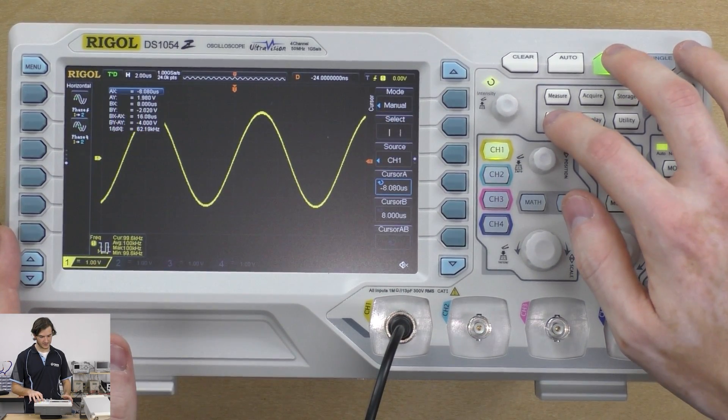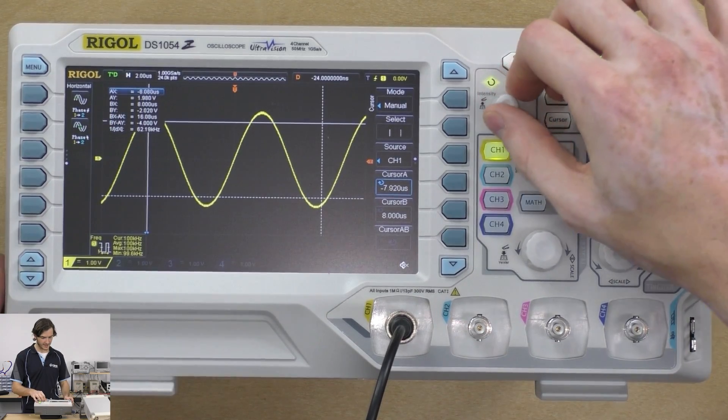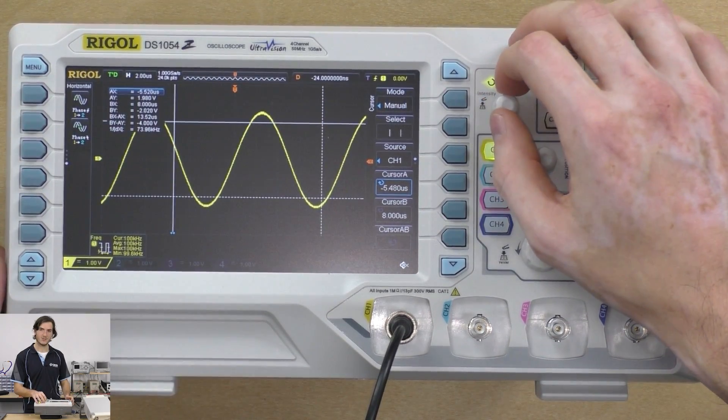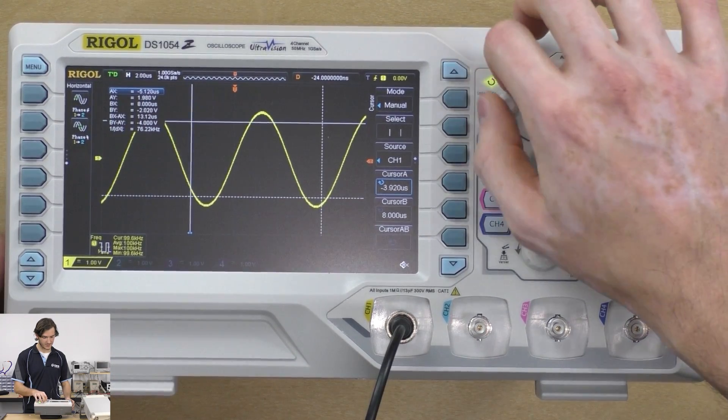We can bring up the two XY modes so we have two solid lines for XY and two dotted lines for XY. We can now take some point measurements so I can bring my solid line to the bottom of this trough.